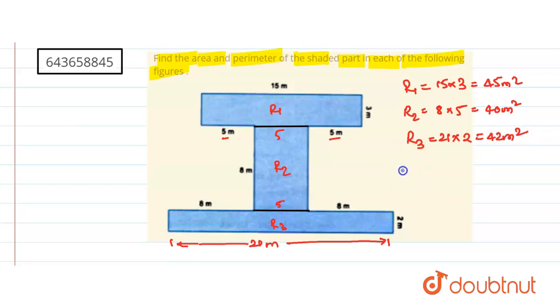And therefore, the total area of shaded region is equal to what? This is R1 plus R2 plus R3. So this is 45 plus 40 plus 42 and just if we add them, we will get 5 plus 2, 7, 4 plus 4 plus 4 is 12. So it is 127 meter square. So this is my area of shaded region.